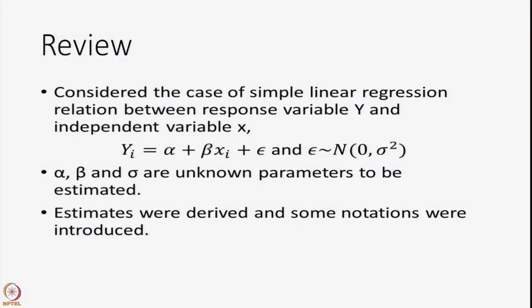Hello and welcome to the course on dealing with materials data. In the previous session, we started working with regression analysis and we are going to go further on it. First, let us review what we did in the past. We considered the case of simple linear regression: the relationship between a response variable y and an independent variable x, denoted as yi = alpha + beta*xi + epsilon, where epsilon is a random error assumed to have a normal distribution with mean 0 and variance sigma squared.